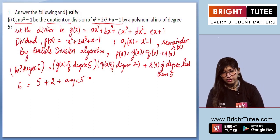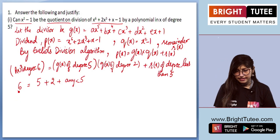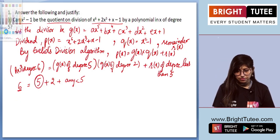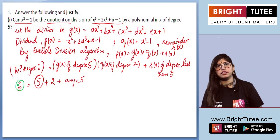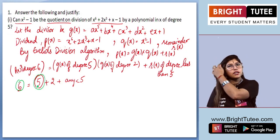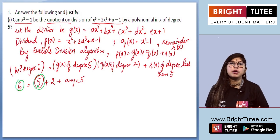Over here, if I'll just check, P(x) is of degree 6, we cannot change this because they have already given. We know G(x) is of degree 5, it's already given, but they ask us: Can x square minus 1 be the quotient?